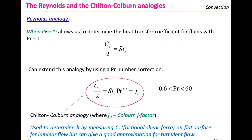The Reynolds analogy helps us solve problems when the Prandtl equals one, and it can help determine the heat transfer coefficient for fluids when the Prandtl equals one. If we want to extend this analogy by adding a Prandtl correction, we call it the Chilton-Colburn analogy. The only difference is that we introduce the Prandtl as a correction, and this helps us solve for wide ranges of the Prandtl. It is typically used to determine the convective heat transfer coefficient by measuring frictional shear force on a flat surface for laminar flow, but it can give good approximations for turbulent flow as well.